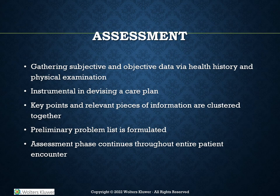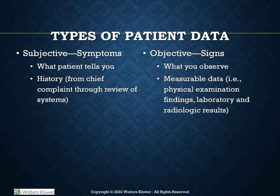We are going to discuss the two types of data: subjective and objective, and why these pieces are important to include through the entire encounter. Subjective symptoms are exactly what the patient says they are. This is an important part of the health history as far as the chief complaint and review of systems. You will document exactly what the patient says, not your interpretation of what they are saying.